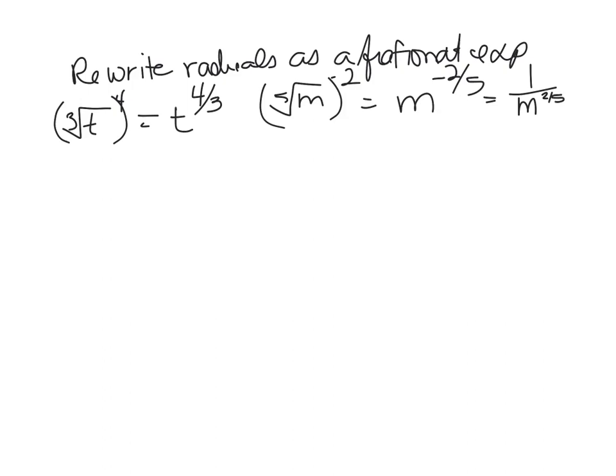The fourth root of F squared could be F to the 2/4 power. The exponent, even though it's inside the radical, will still go on top, and that can actually be reduced to F to the 1/2.